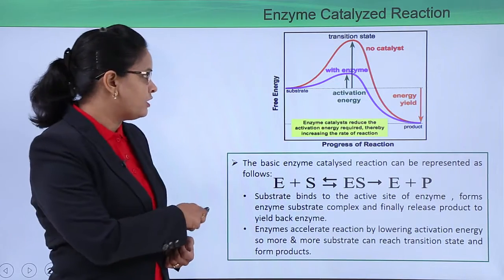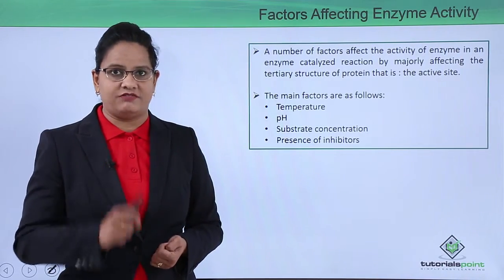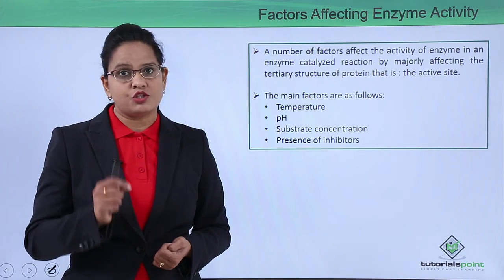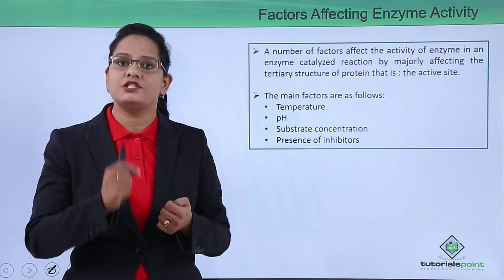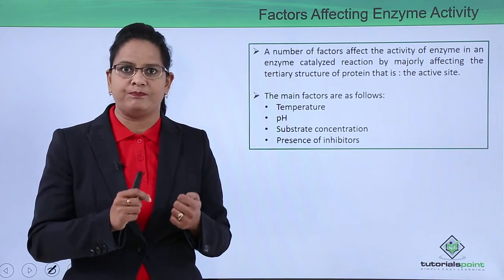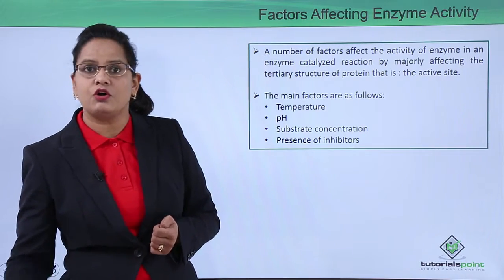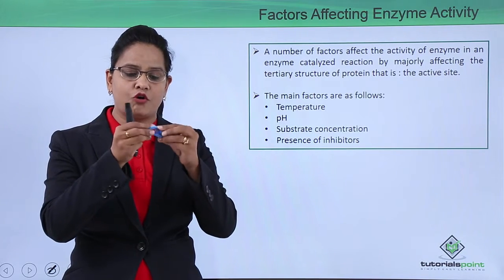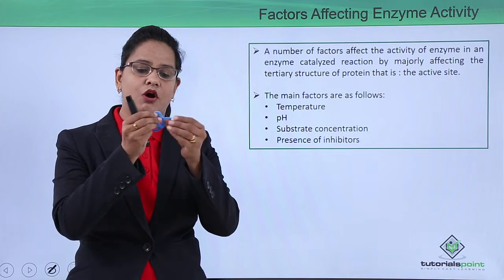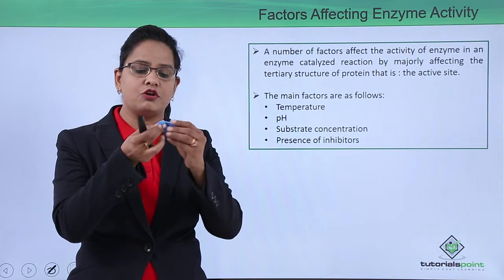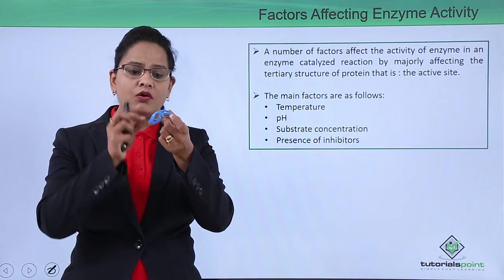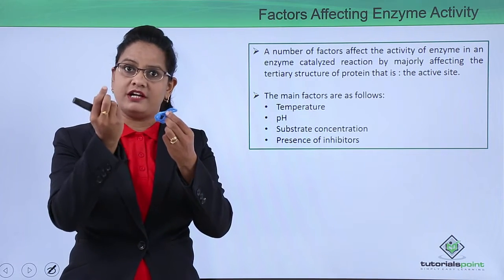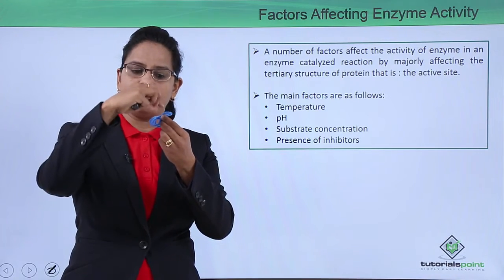Enzymes are protein in nature, so let me show you how a tertiary structure is formed by folding of a protein. This is a primary structure that undergoes different types of coilings, foldings, disulfide linkages, and hydrogen bonds, leading to formation of a folded protein. This folded region represents the active site of the enzyme, and a substrate with a similar structure to the active site will come and bind to it.